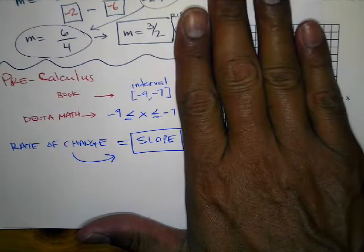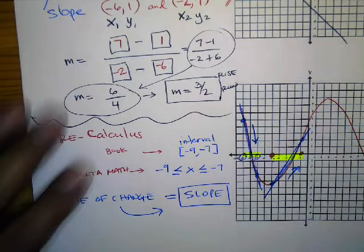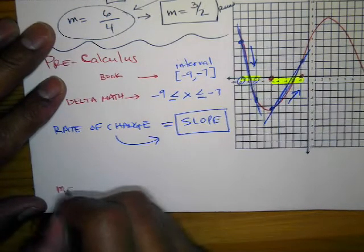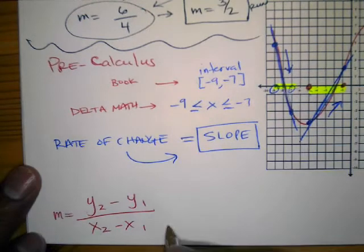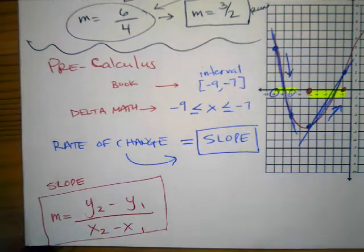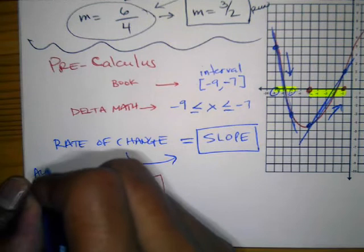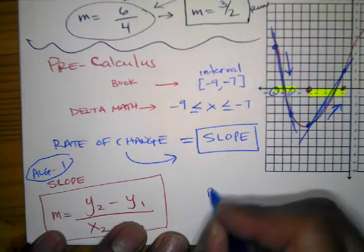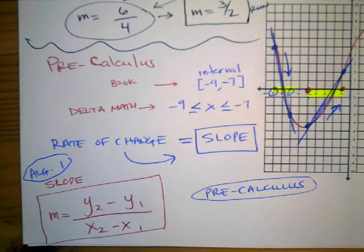So you're going to evaluate rates of change, but you're not going to see anything graphically — we're going to do everything using the formula. Let me have you compare the Algebra 1 formula with the pre-calculus one side by side. In Algebra 1, slope is M equals Y2 minus Y1 over X2 minus X1. In pre-calculus, they're not calling it slope — they give it a new name and a new look.